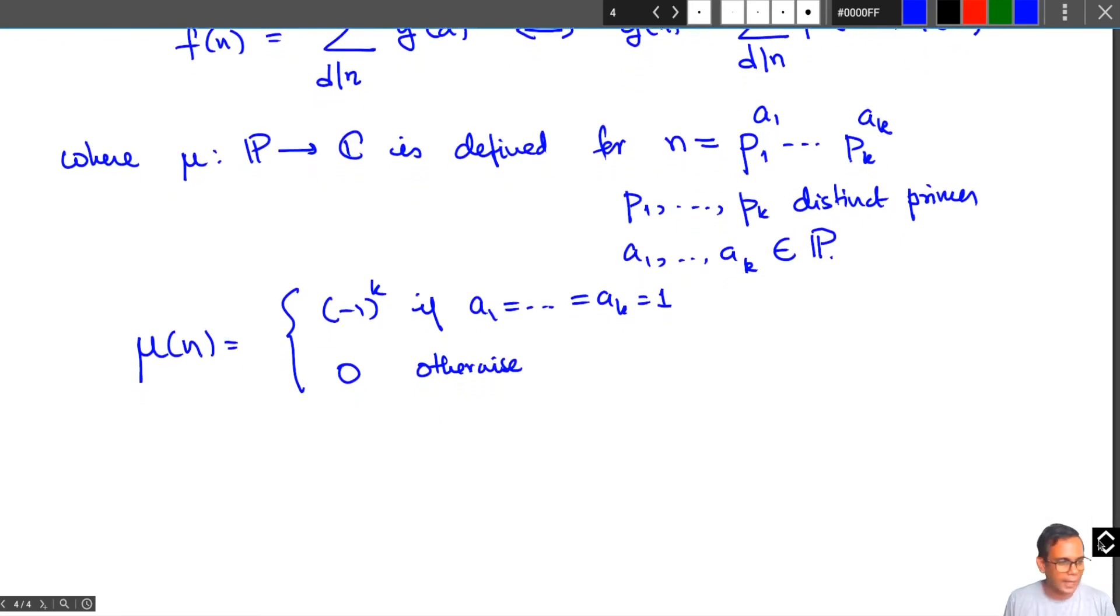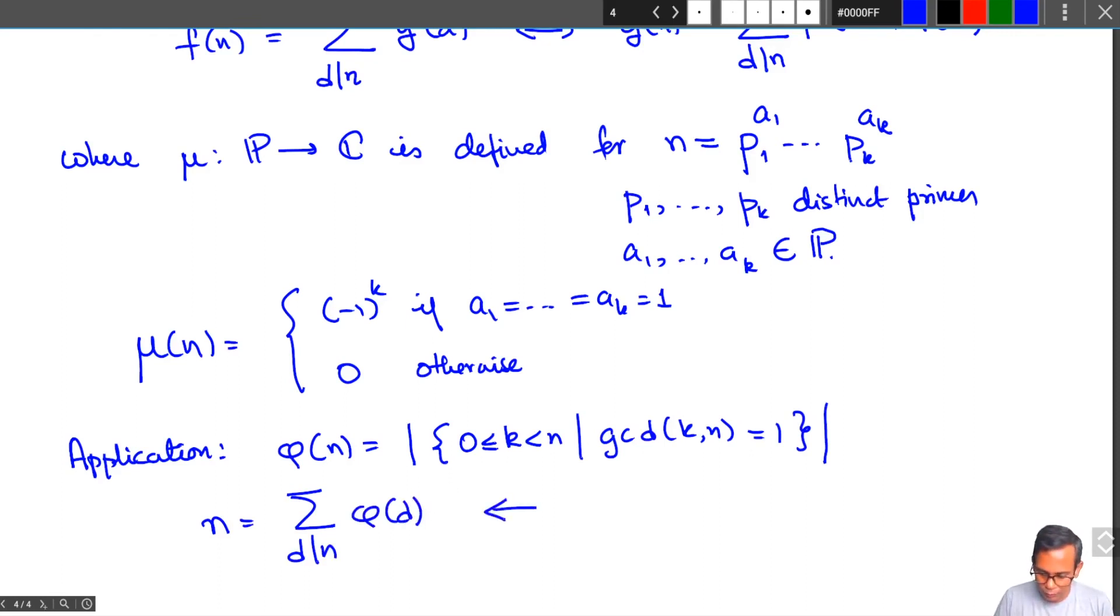A very standard application of this is to compute Euler's totient function. If you define φ(n) to be the number of integers k, 0 ≤ k < n, such that gcd(k, n) = 1, then what you can show is that n = summation d divides n φ(d), and this turns out to be equivalent to a formula that computes φ.